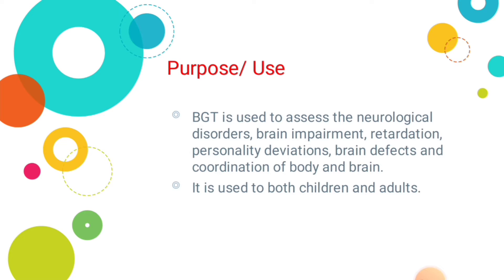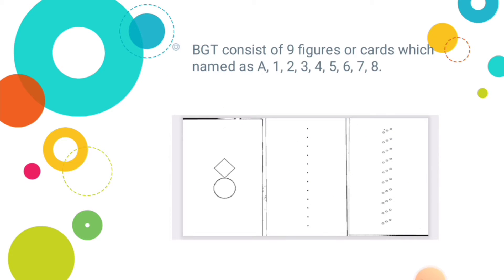BGT is used for both children and adults. BGT can be applied on both children and adults. BGT consists of nine figures or cards named as A, 1, 2, 3, 4, 5, 6, 7, 8. The Bender Gestalt Test has a total of nine figures or nine cards.